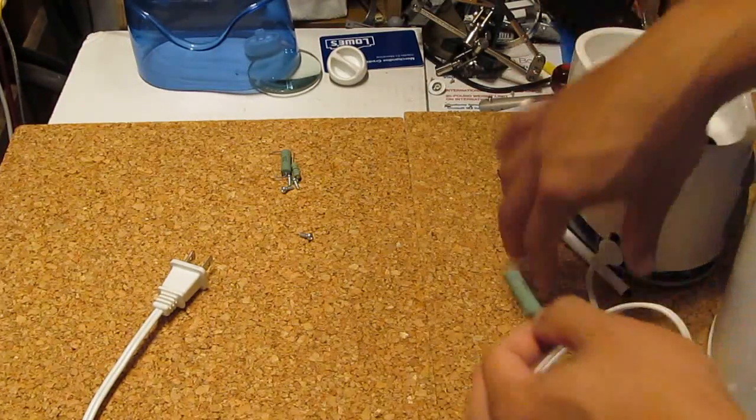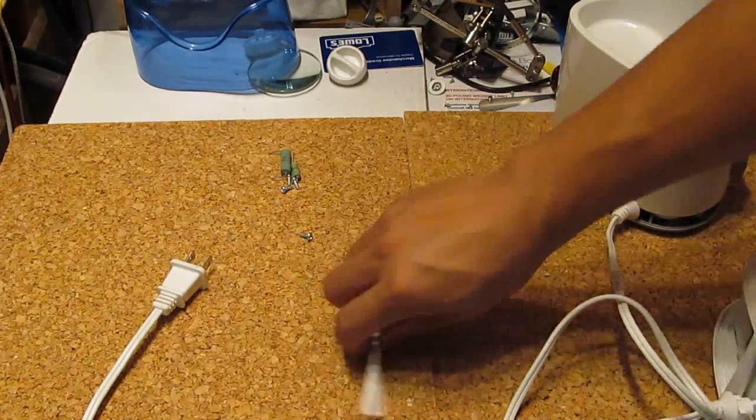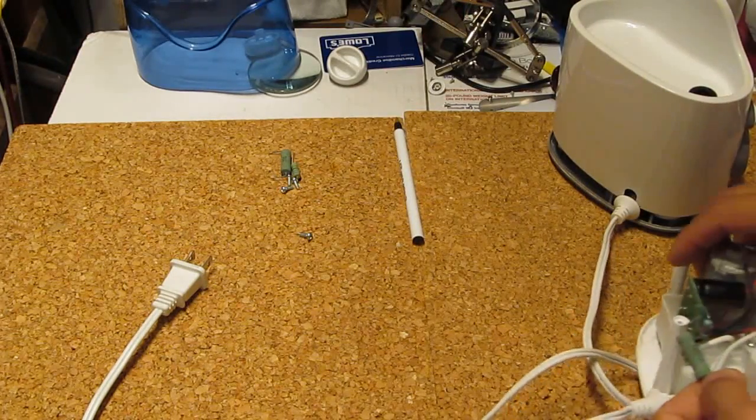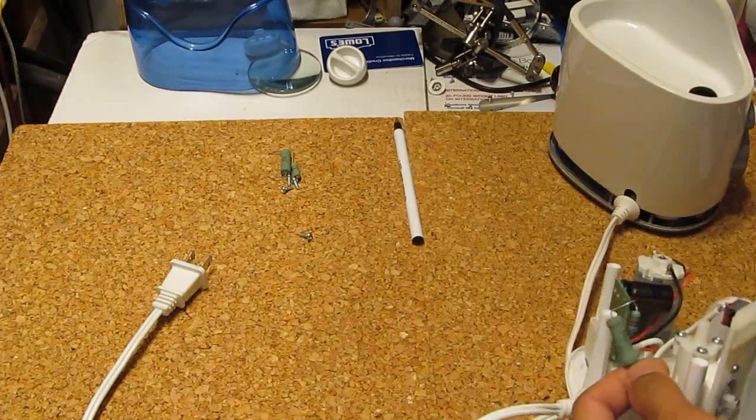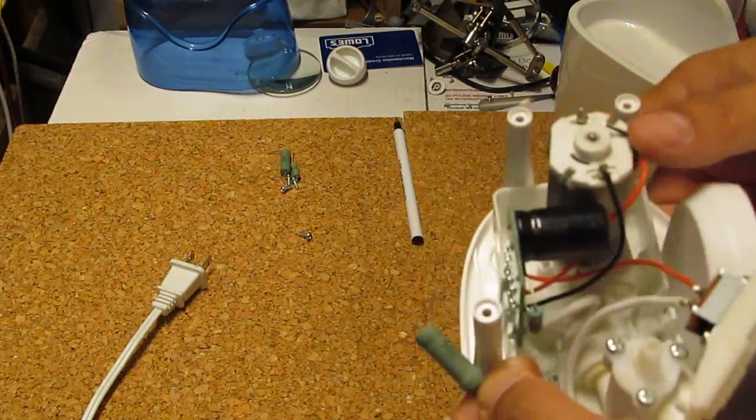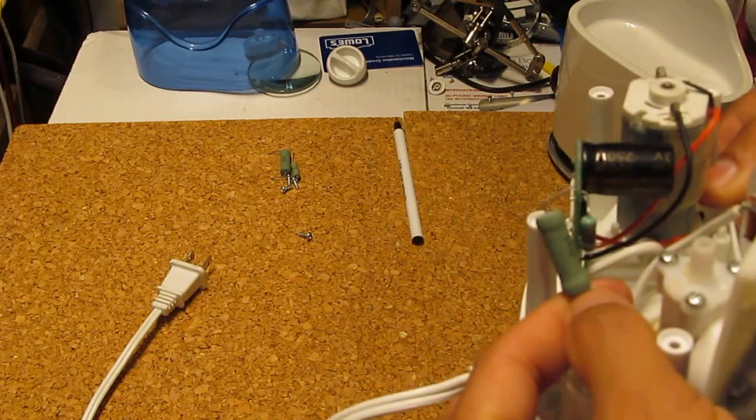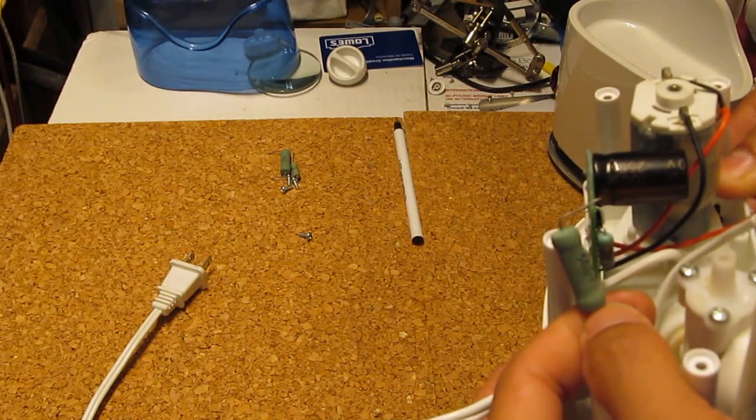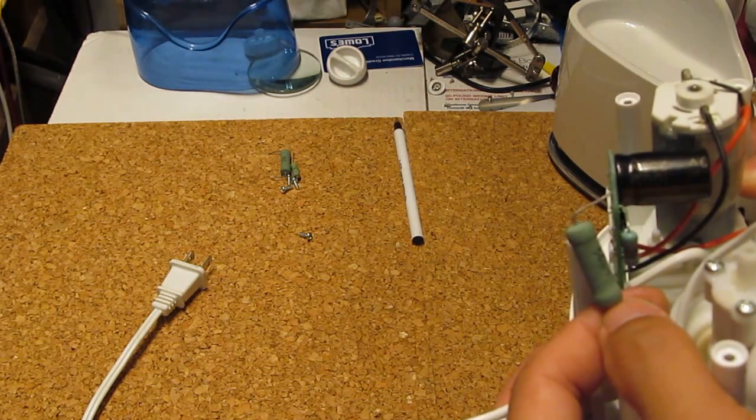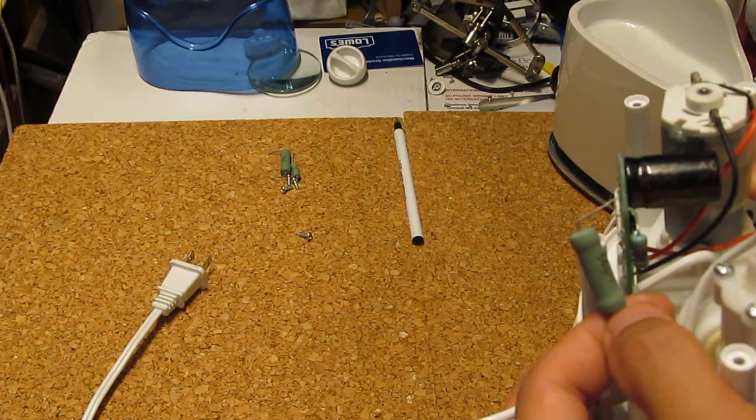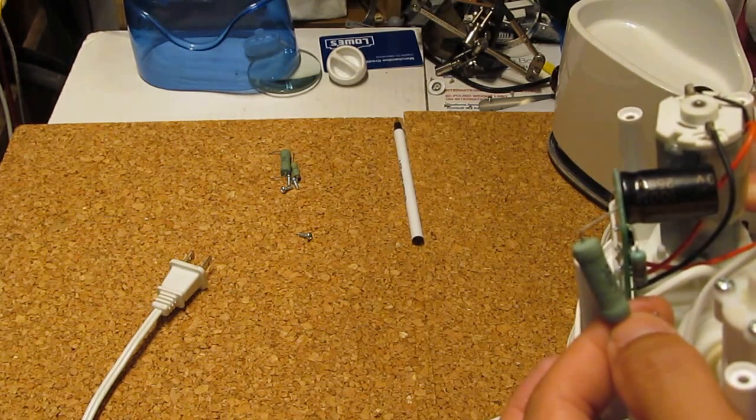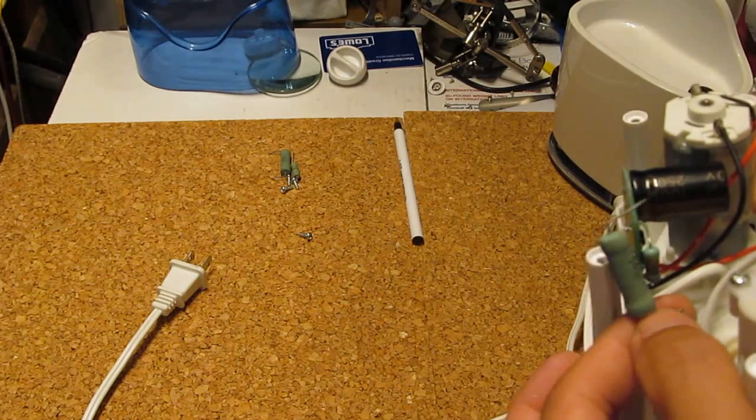As you can see, this resistor is a lot bigger than the one on here, like that. The bigger the resistor, the more amps it can handle. That's all about it. It can handle a lot more amps so it can get a lot hotter.